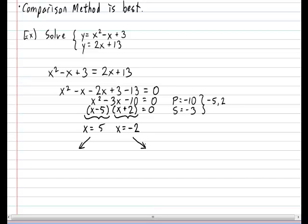To keep things simple try to always plug the values back into the linear rule. So I'm going to use the linear rule y equals 2x plus 13. Let's plug in our first x. Y equals 2 times 5 plus 13 and you get a y equals 23.